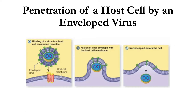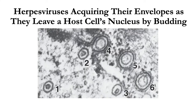An enveloped virus enters the host cell by binding to a host cell membrane receptor. The second step is penetration through fusion of the viral envelope with the host cell membrane. Then, on the third step, uncoating happens and the nucleocapsid enters the cell as the viral nucleic acid escapes from the capsid. After this, it proceeds with the last three steps, just like a non-enveloped virus. Whenever you encounter an enveloped virus, it has escaped from its host cell by budding. This electron micrograph of herpes viruses shows them acquiring their envelopes as they leave a host cell's nucleus by budding. Numbers 1, 2, 3 are viruses within the nucleus; number 4 is a virus in the process of leaving the nucleus by budding; and numbers 5 and 6 are viruses that have already acquired their envelopes.